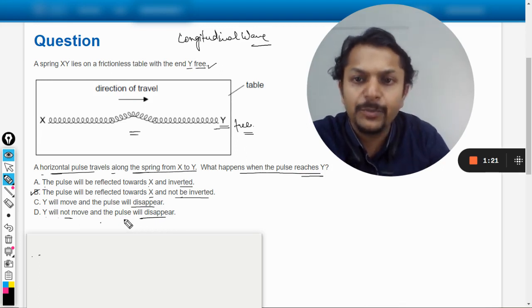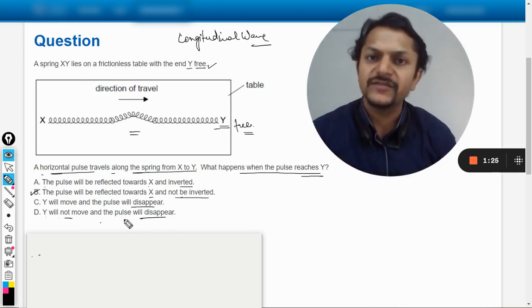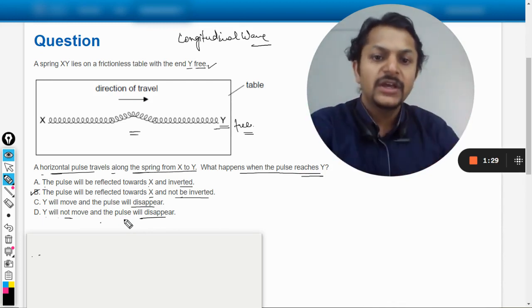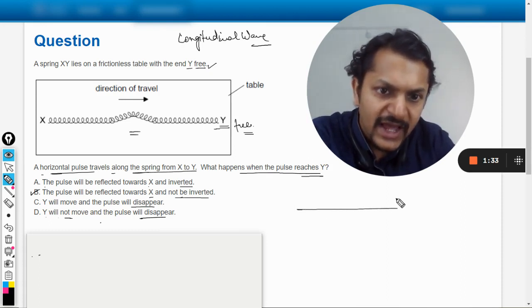So pulse will not disappear in any case because energy has to be conserved there. And what is this thing about reflection? Let me give you a little example. Let us say this is a string.